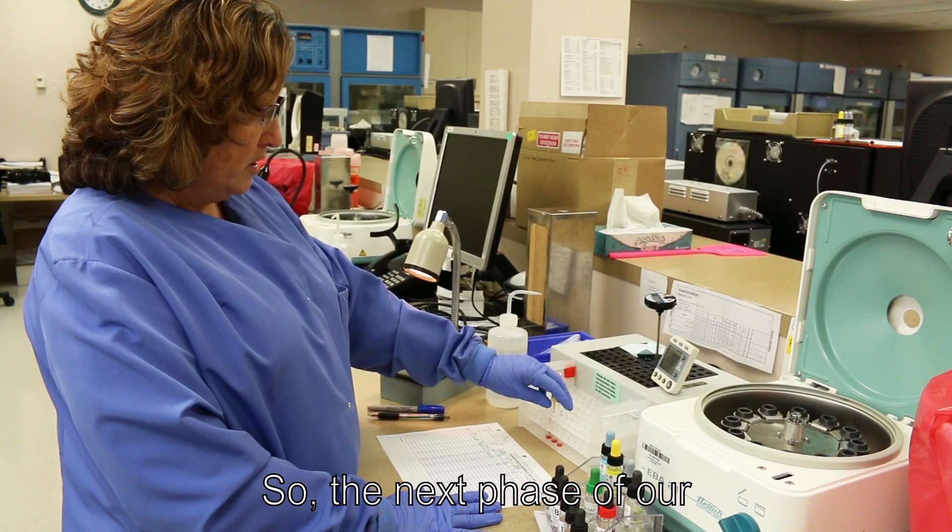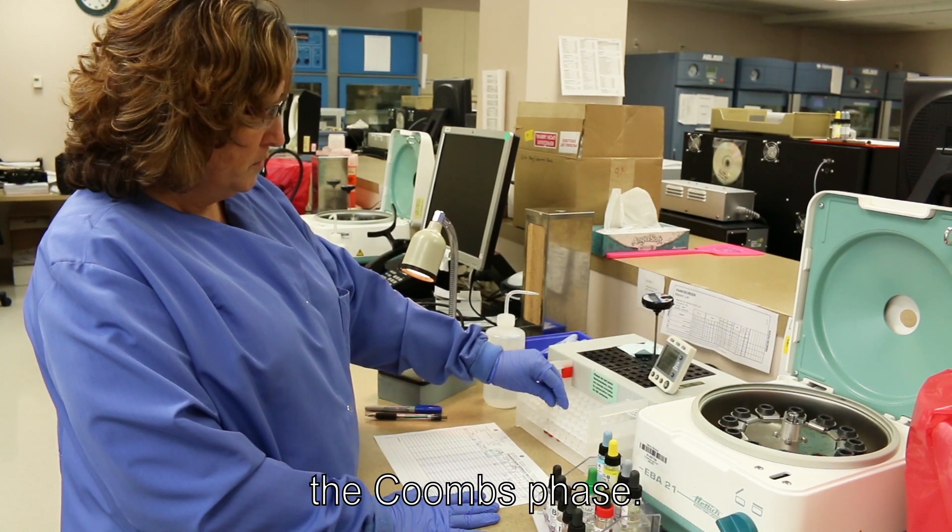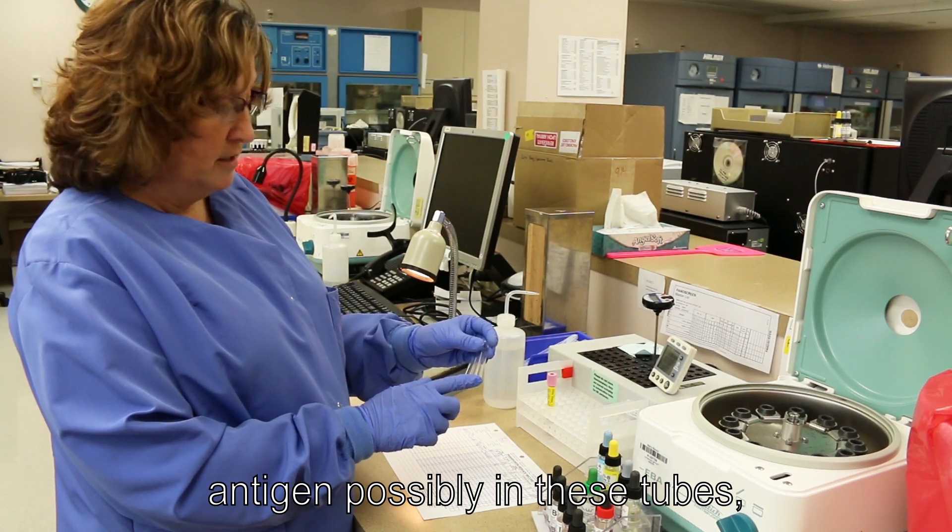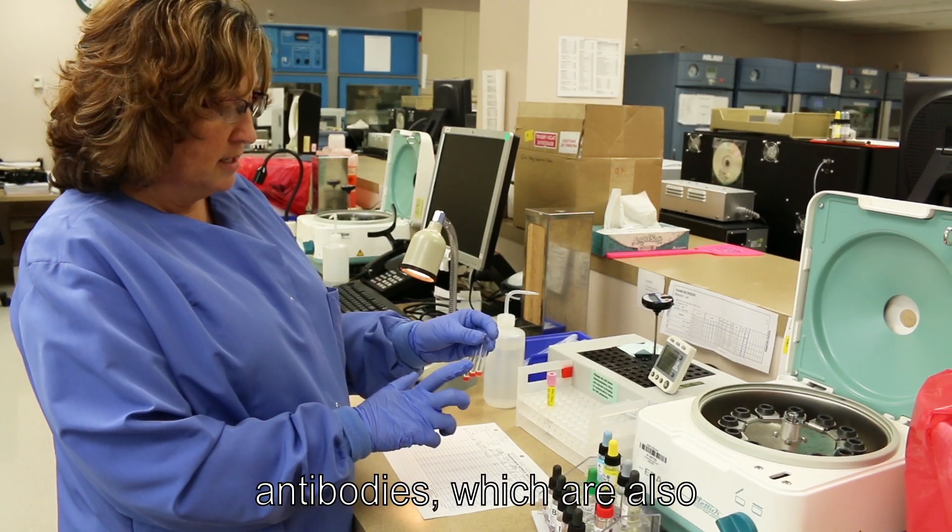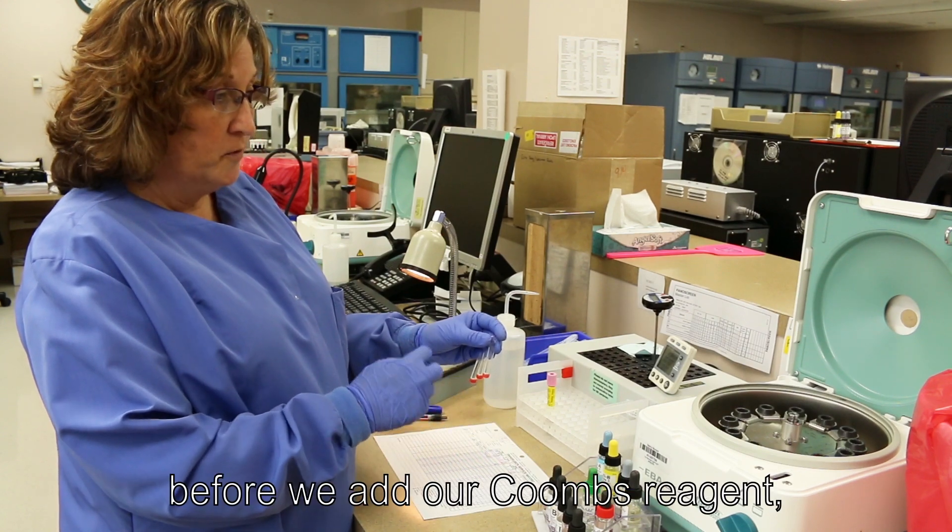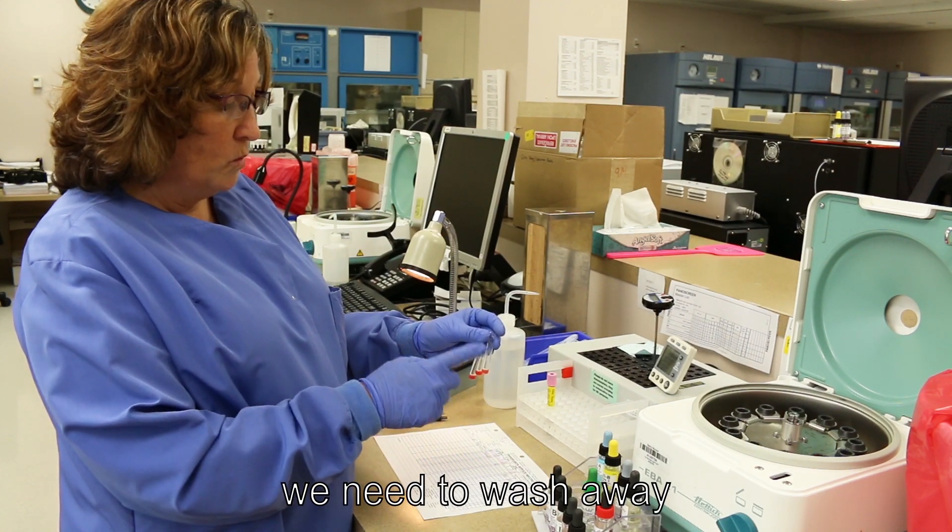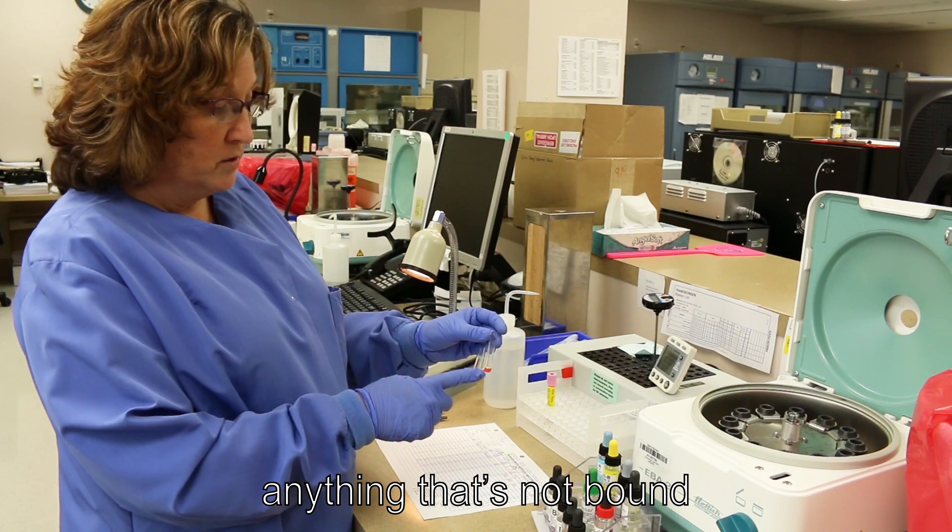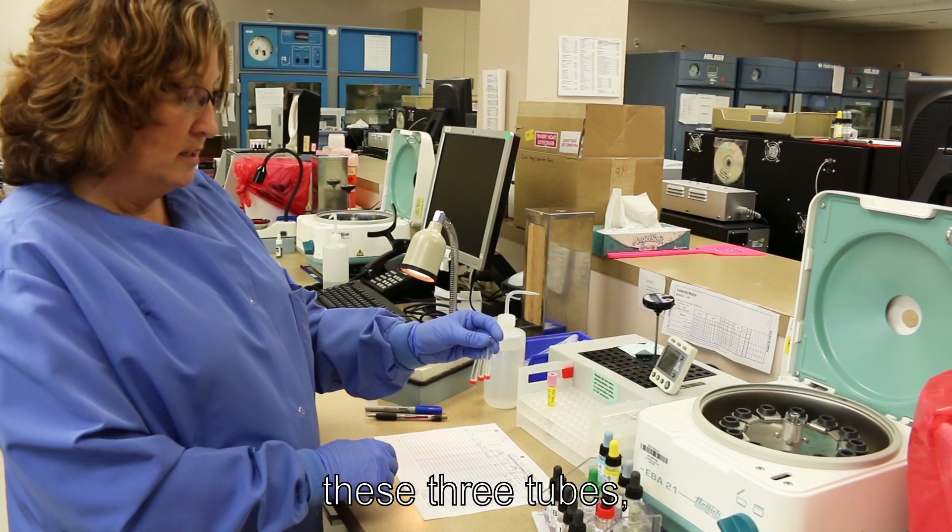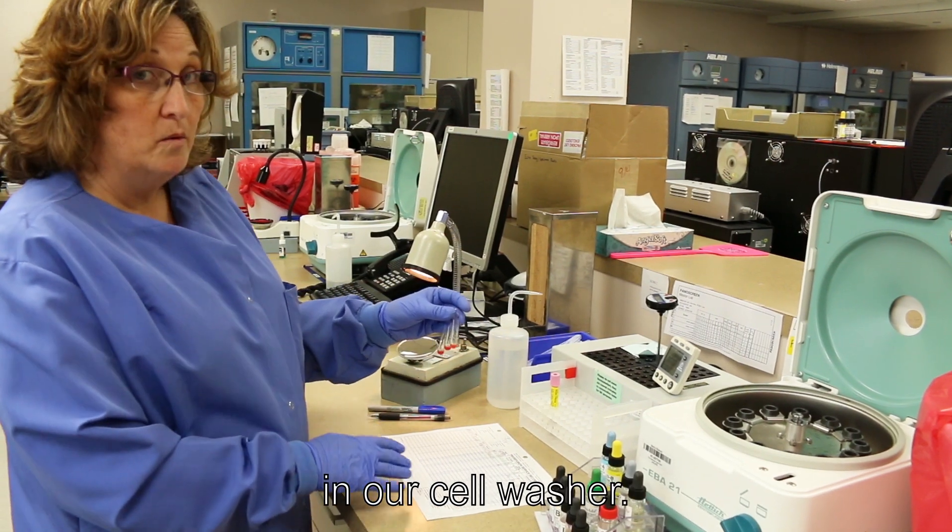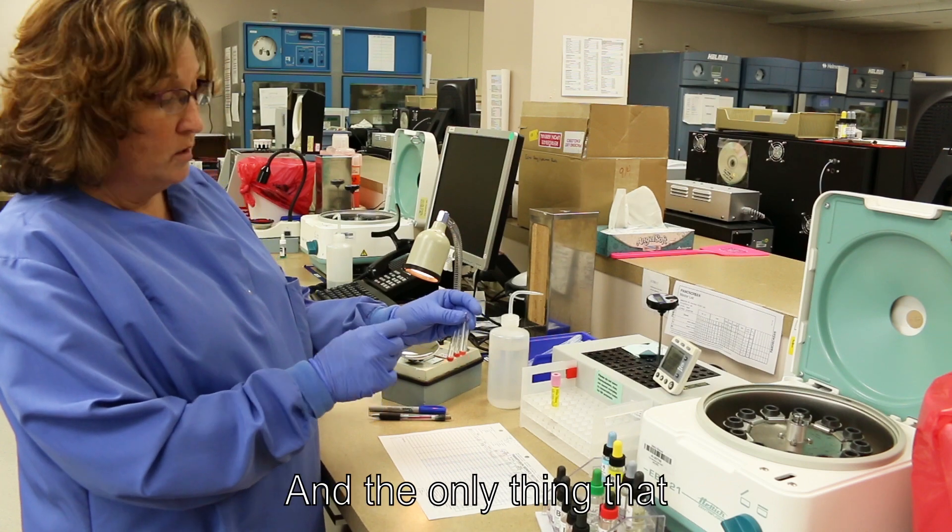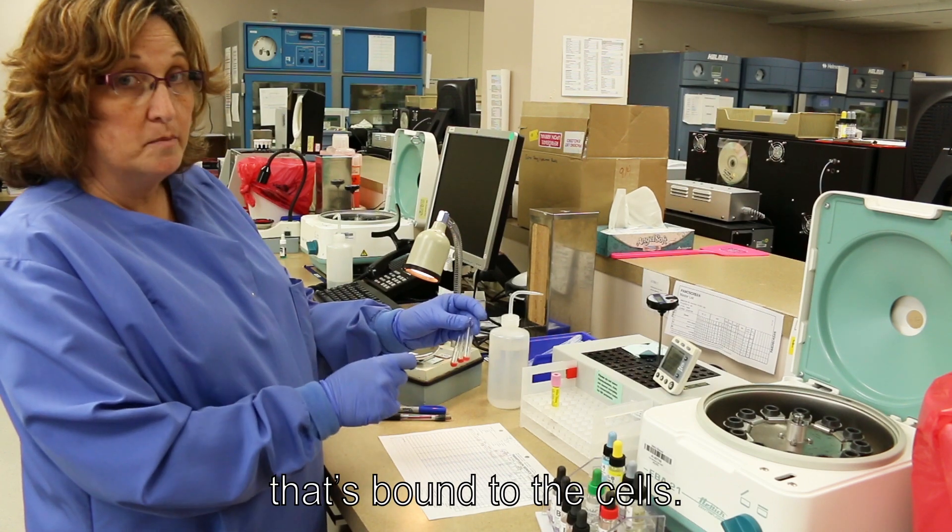So the next phase of our antibody screen is to do the Coombs phase. But one thing we need to keep in mind is there's antibody bound to antigen possibly in these tubes. But there's also extraneous antibodies which are also called proteins. So at this phase before we can add our Coombs reagent we need to wash away anything that's not bound to the antigen that's on these cells. So after our 37 degrees we're going to take these three tubes and we're going to put them in our cell washer. And it will dispense saline and wash up the cells. And the only thing that will remain is antibody that's bound to the cells.